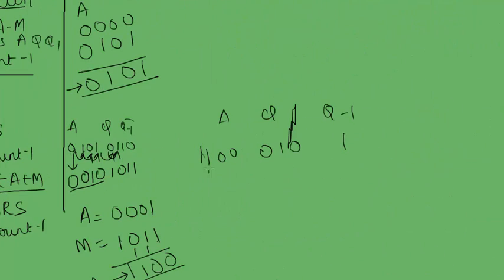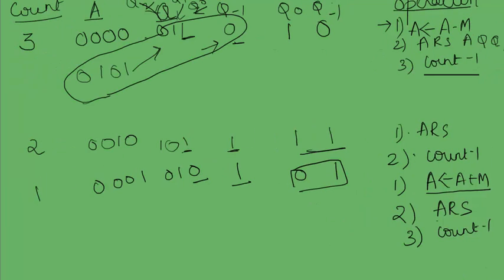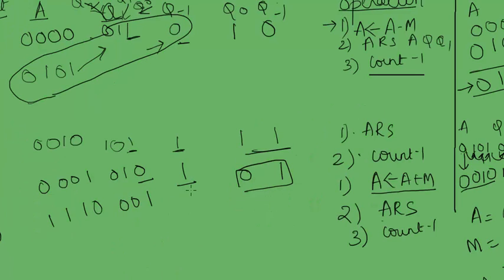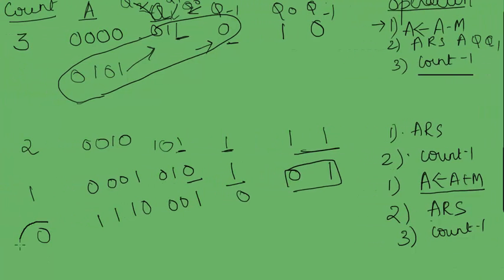Now perform the final arithmetic right shift. a = 1,1,0,0 shifts to 1,1,1,0 (MSB is 1, so sign bit is propagated). q shifts to give 0,0,1, and q-minus-1 becomes 0. Count is decremented to 0. Since count has reached 0, we stop the process. The final result stored in a concatenated with q gives the product 1,1,1,1,0,0,1 which represents −15.